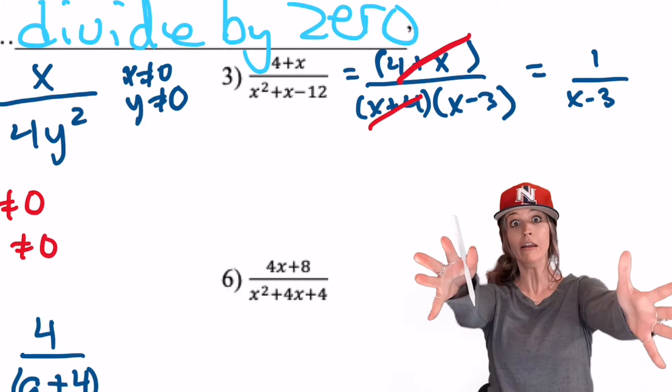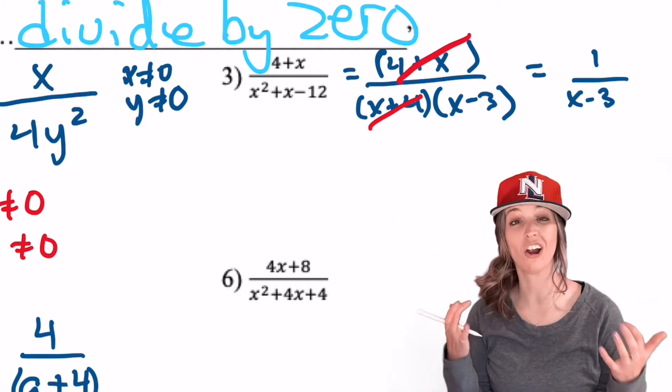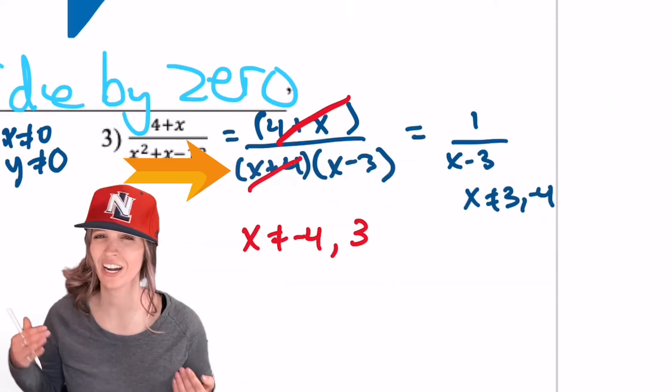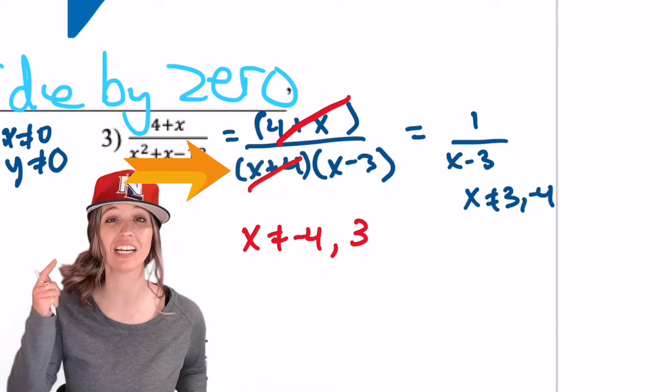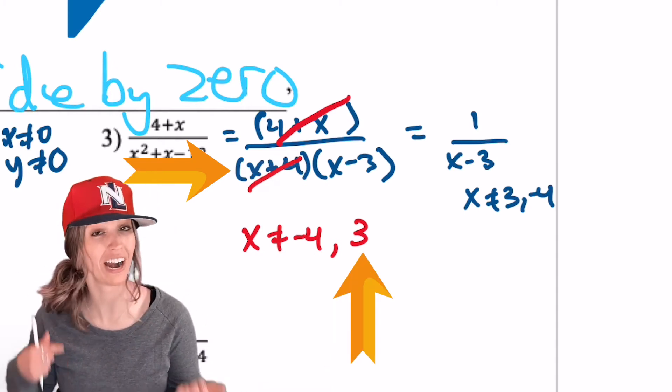Is that my final answer? No! We still need to state our excluded values. We have an x plus 4 and an x minus 3 in the denominator. So we have to exclude x equals negative 4 and 3.